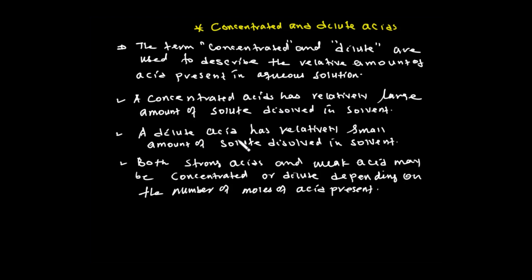Dilute acid has a relatively small amount of solute dissolved in the solvent. The solute-to-solvent ratio is low. Both strong acid and weak acid can be either concentrated or dilute, depending on the amount of acid present.